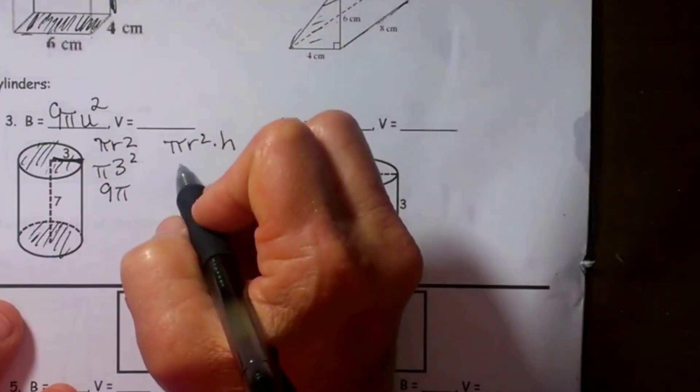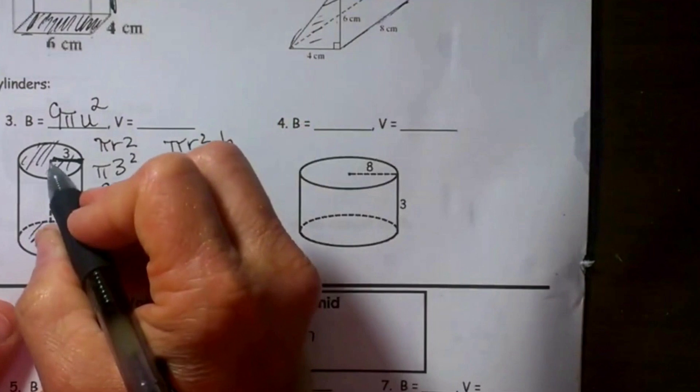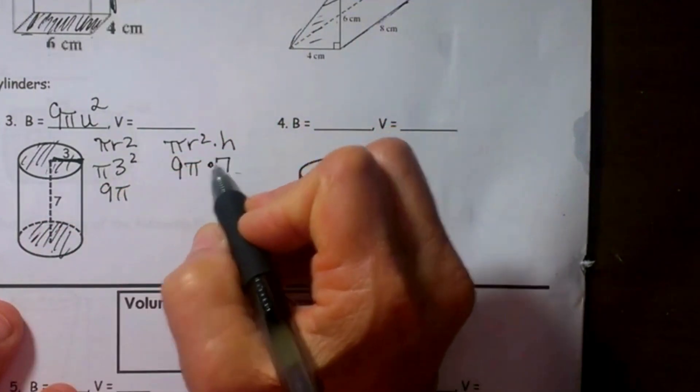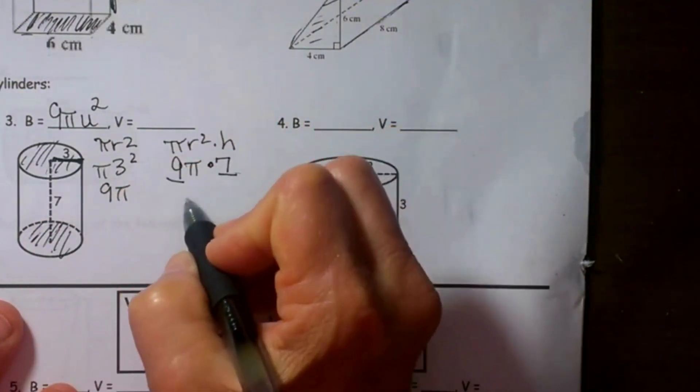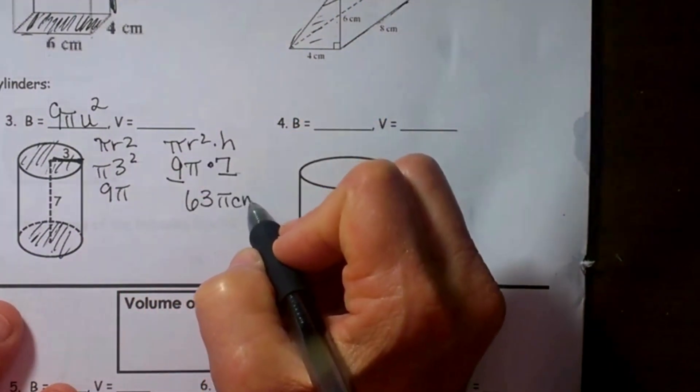And then we're going to take that base area which is 9π times the height. Well the height in this case is 7. So 9 times 7 is 63. So 63π centimeters cubed.